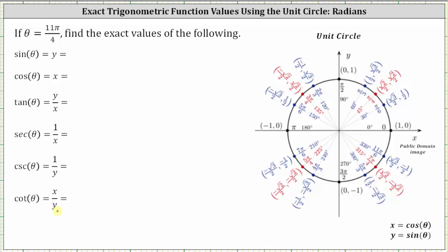For the next step, we determine where the terminal side of 11 fourths pi radians falls when sketched in standard position. One complete rotation is equal to two pi radians in the counterclockwise direction from the positive x-axis. Two pi radians is equal to eight fourths pi radians, which means we can write 11 fourths pi radians as eight fourths pi radians — two complete rotations — plus three fourths pi radians.